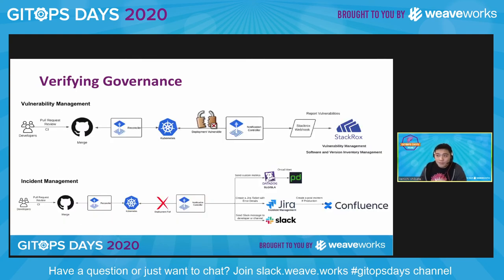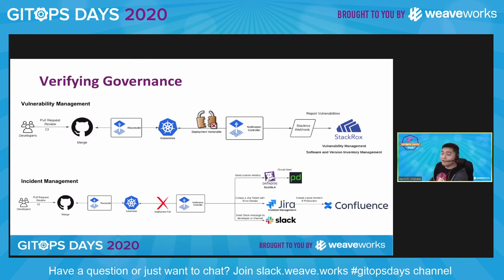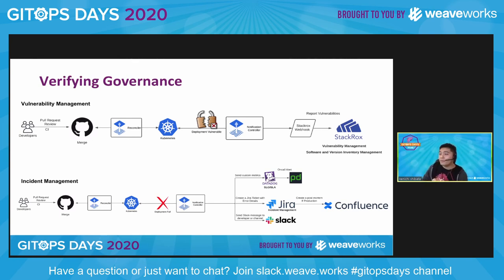For vulnerability management: a developer merges a pull request, a reconciler like Flux applies it to Kubernetes, and if there's a vulnerability you can use the notification controller from the GitOps toolkit to create a webhook, send it to StackRox — your vulnerability management database and software inventory — and then triage that group of vulnerabilities. Ideally you'd catch it in the CI step, but if not, or if you choose to risk-accept it, you still need to manage it all the way through. Being pragmatic about real-world use cases, it happens.